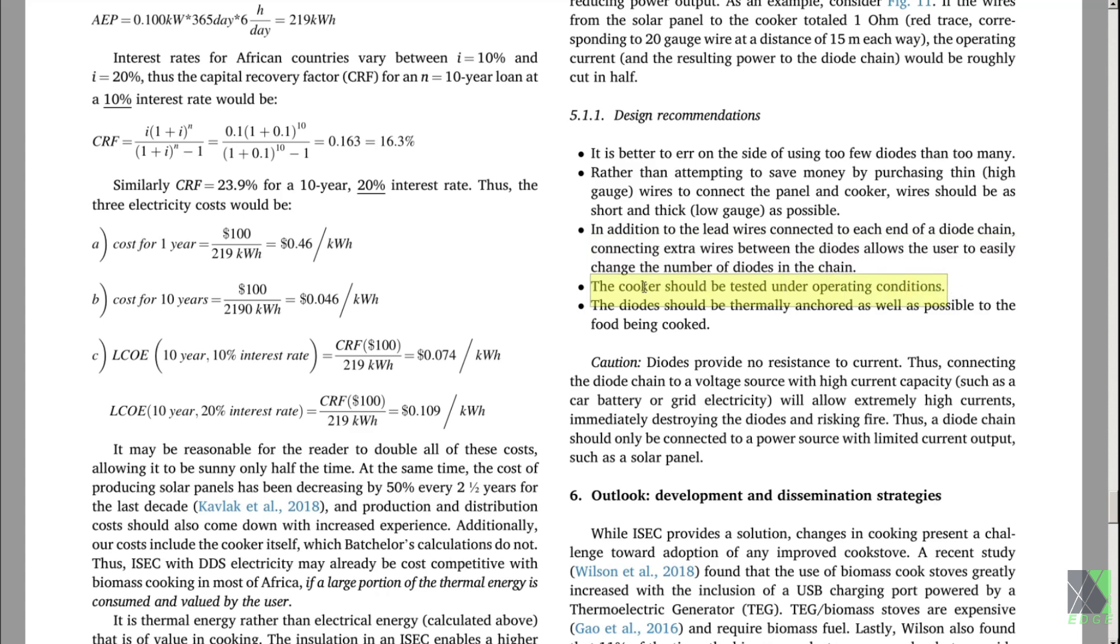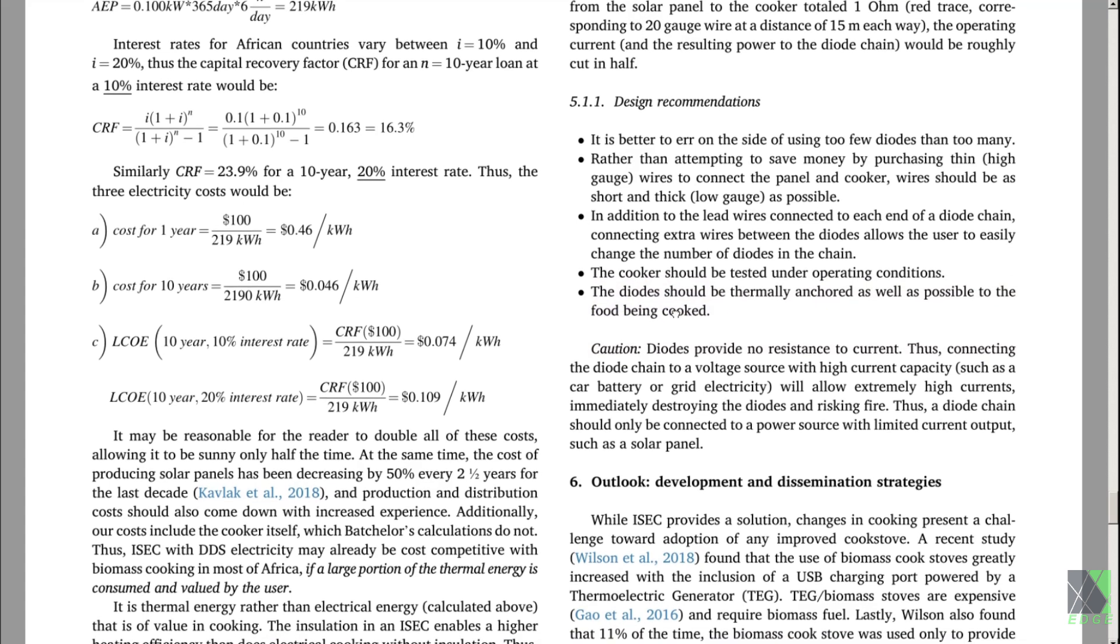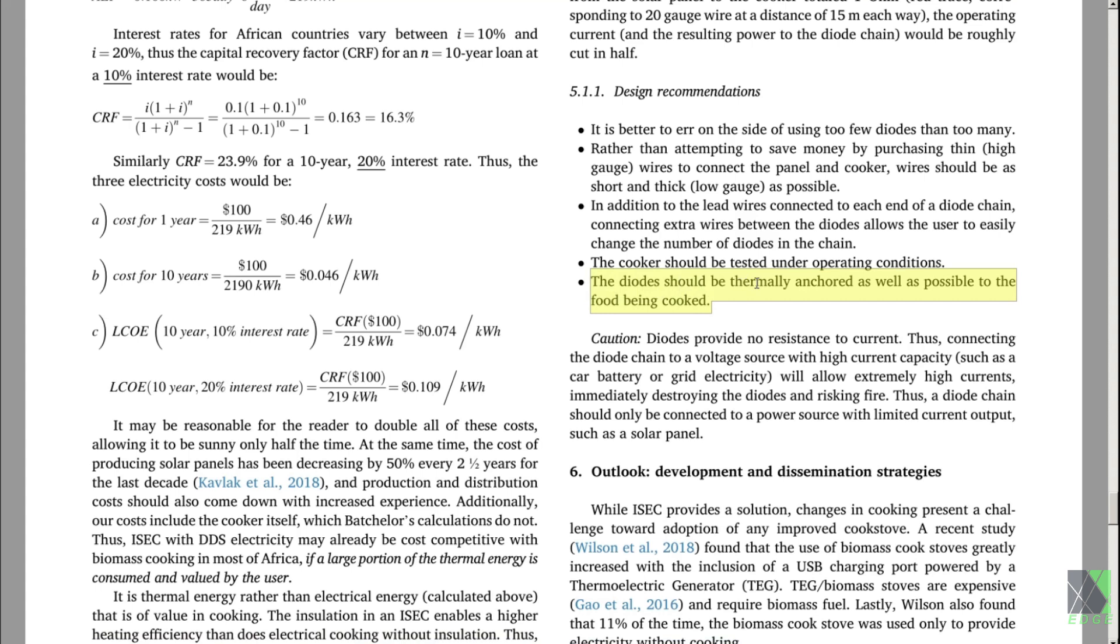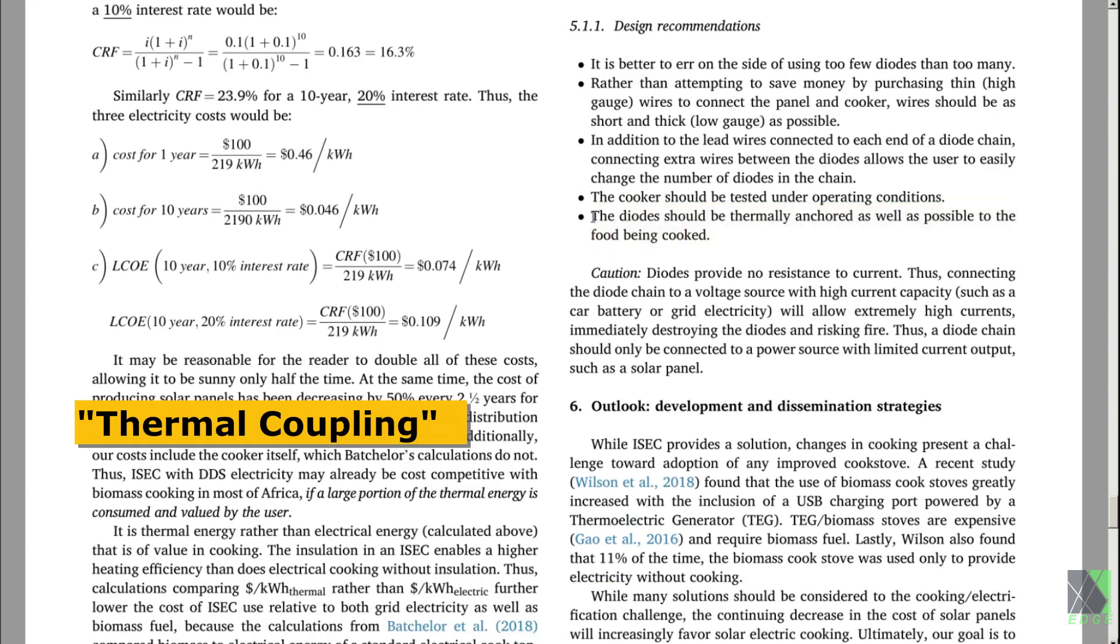And the cooker should be tested under operating conditions. Actually that's a challenge. You never know when you're going to get enough sun. And you need to test it under a variety of conditions to see how they perform. And the diode should be thermally anchored as well as possible to the food being cooked. This is one of the biggest messages in the entire paper. And it bears repeating. You must thermally anchor the diodes to the food being cooked. Well, that's a challenge. It's not as easy as it sounds. What they're showing is using a thermal compound to anchor the diodes. And that's fine. There's 70 different ways I'm sure to do that. I have my own ways of doing it, which I have not necessarily gone into detail on. As long as the thermal coupling method or thermal anchoring method is effective, and you get the heat out of the diodes and into the food, then you're good to go.